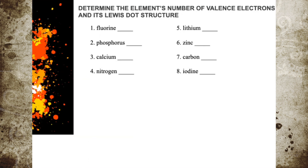Let's try the following practice. You are asked to determine the element's number of valence electrons and its Lewis dot structure. For fluorine, which is in the 7A group, fluorine will have seven valence electrons. Phosphorus, on the other hand, is in group 5A, therefore phosphorus will have five valence electrons.